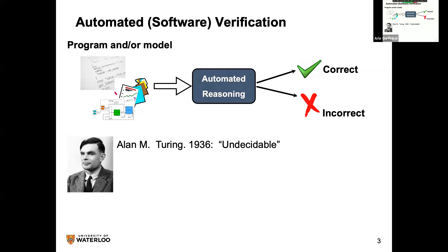So we always have to accept some kind of limitation. Something has to give — either we're not doing real programs (e.g., finite state, no loops), or we're doing complete programs with loops but have a procedure that sometimes does not terminate.